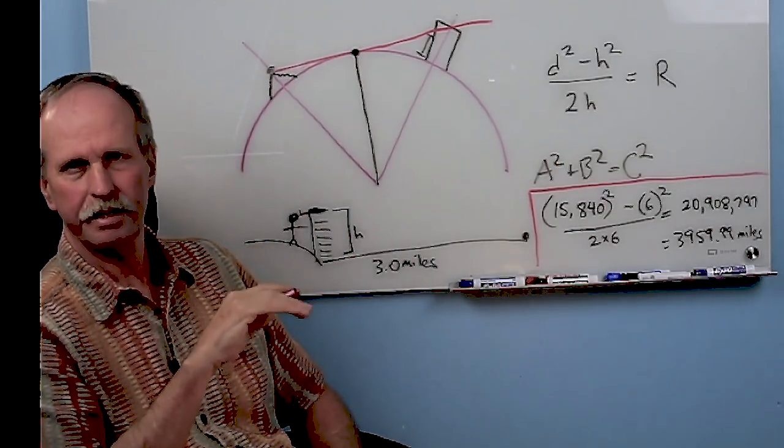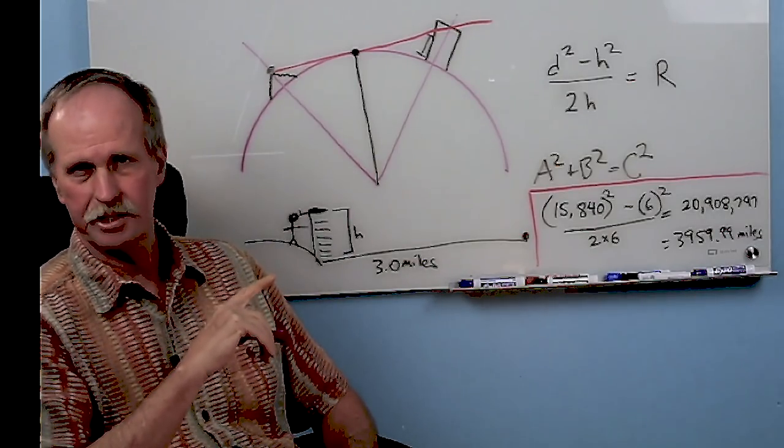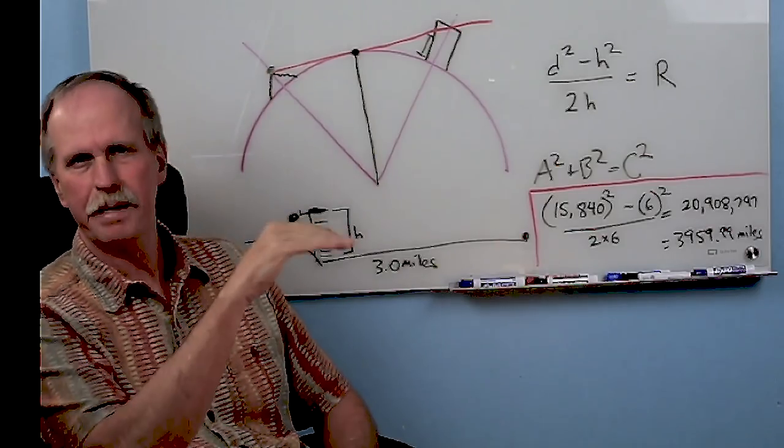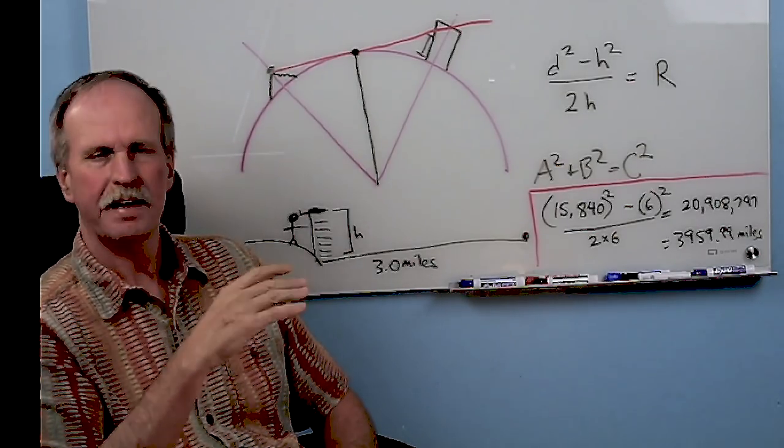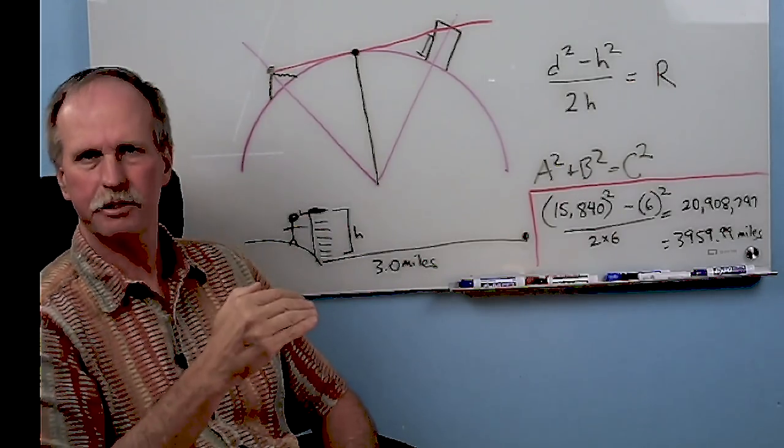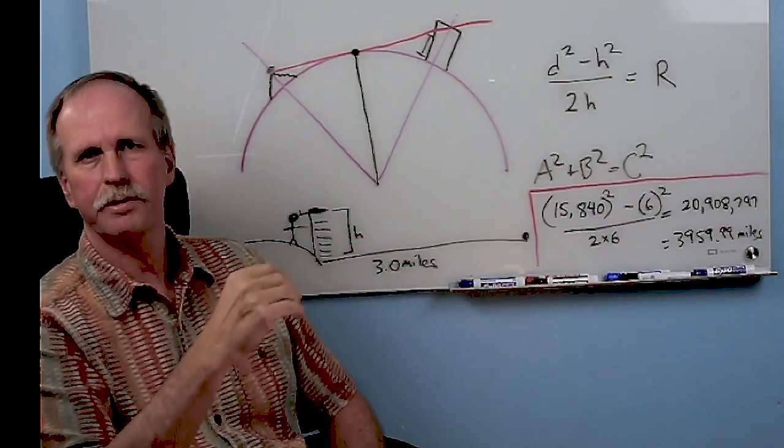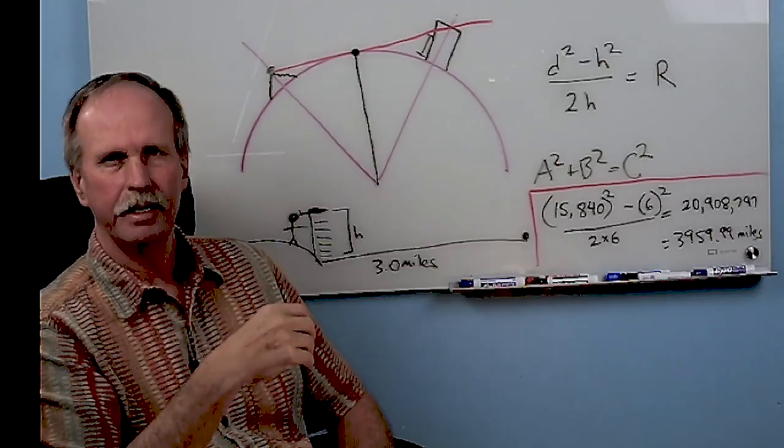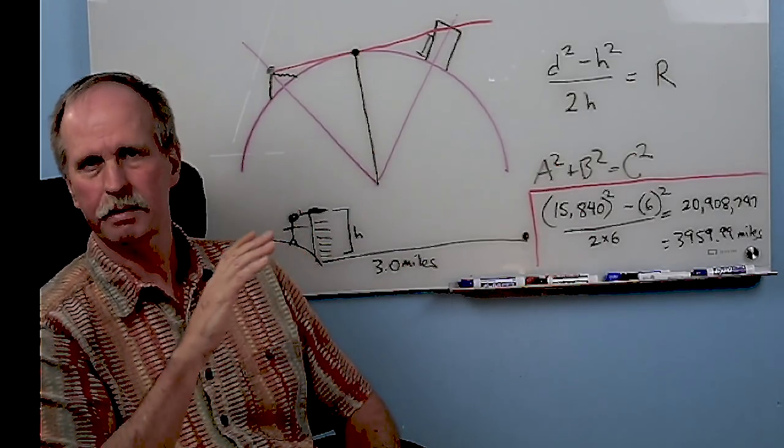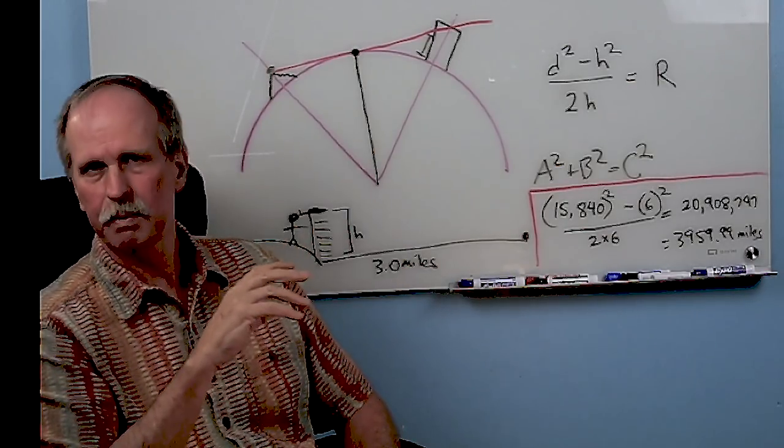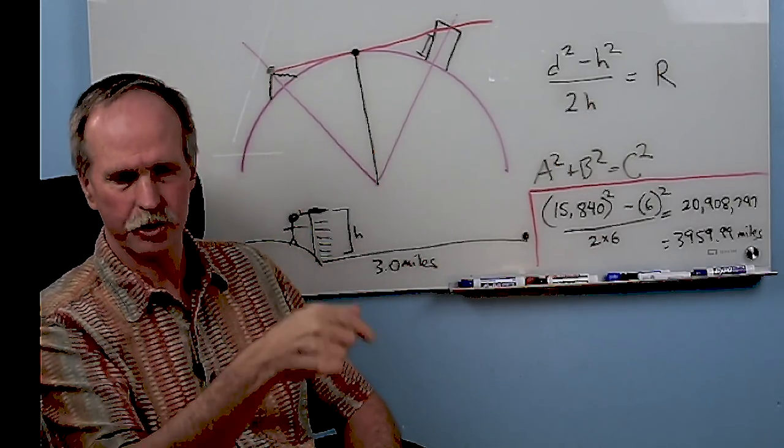Now, one thing that I did address in the video is that this is not the true geometric radius of the Earth. What this is, is the refracted radius of the Earth. Light bends in our atmosphere and makes objects appear to be higher than they are. That is the exact same effect of having an Earth with a larger radius than the actual geometric radius. That's why we sometimes refer to it as refraction equals 7 over 6R.